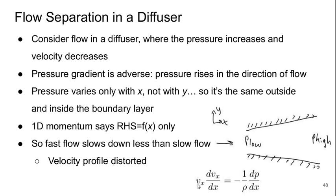So fast flow with large vx will have small dvx dx. Basically it's slowing down slowly. Whereas where we have small vx inside the boundary layer, the dvx dx will be larger and the flow will be slowing down more quickly. This means the velocity profile will be distorted as we move downstream.